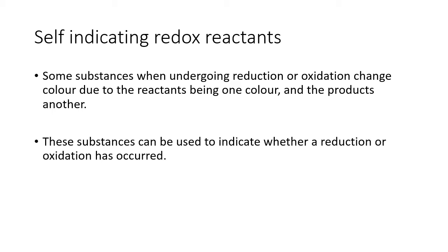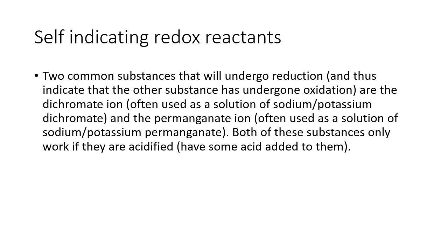Now we move to self-indicating redox reactants. Some substances, when undergoing reduction or oxidation, change color because the reactants are one color and the products are another. These substances can be used to indicate whether a reduction or an oxidation has occurred — similar to the idea of indicators for acids and bases, where the weak acid form and conjugate base form are different colors. The same applies here: the reactant and the product are different colors, indicating that the change has occurred.